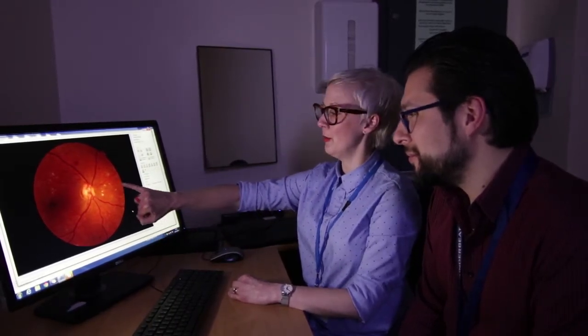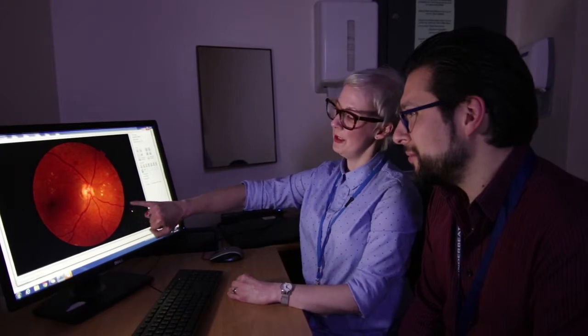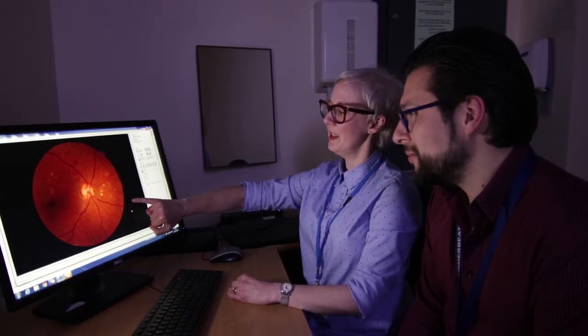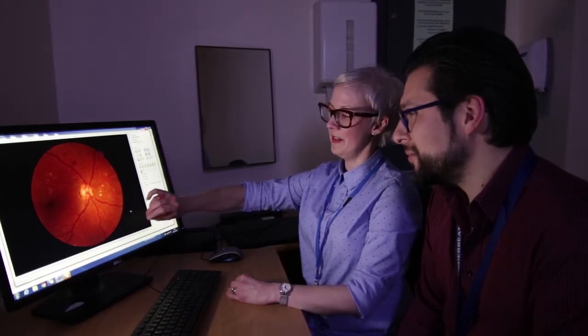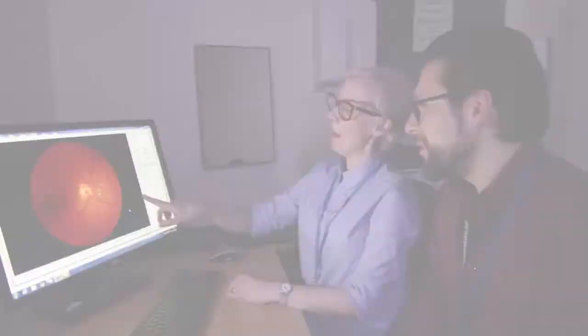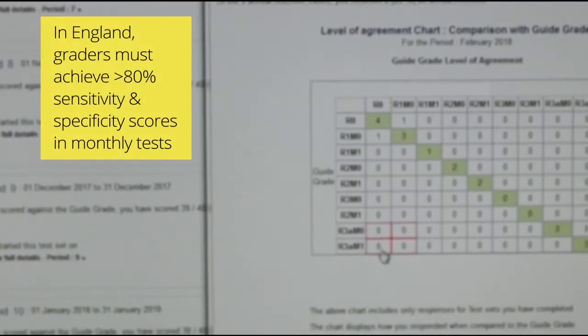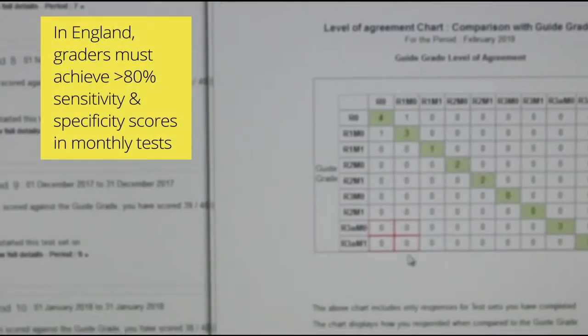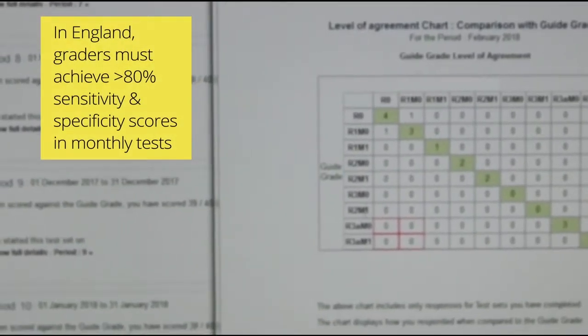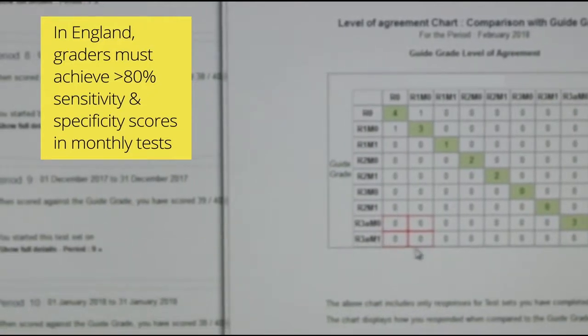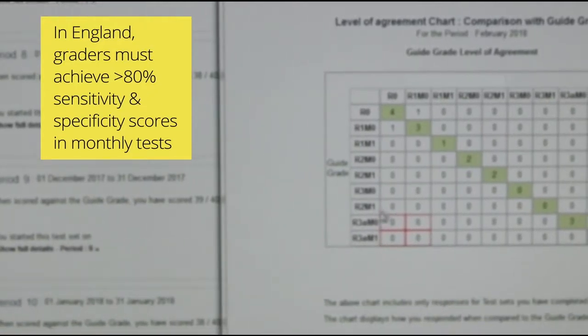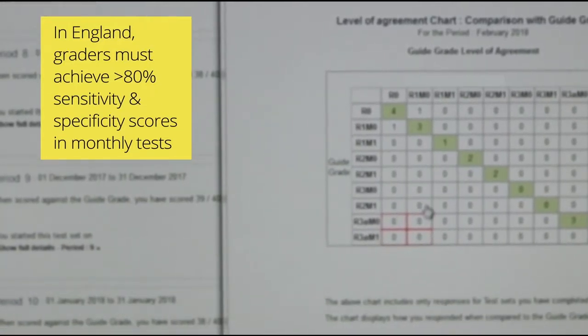Performance of trained graders should be monitored regularly for their accuracy. For example, in the English diabetic retinopathy screening programme, graders are required to take an online monthly test and achieve sensitivity and specificity scores above 80% to retain their accreditation.